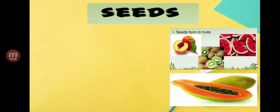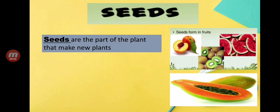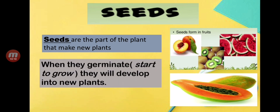Those examples shown are fruits, and all these fruits have seeds in them. What are seeds? Seeds are the part of the plant that make new plants. When seeds germinate — and the word germinate means to start to grow — they will develop into new plants.